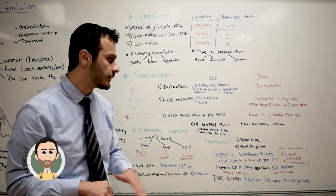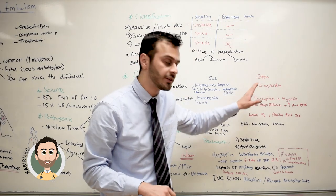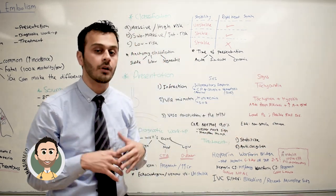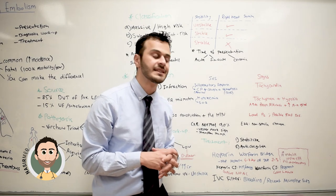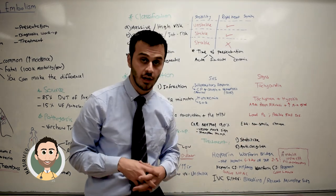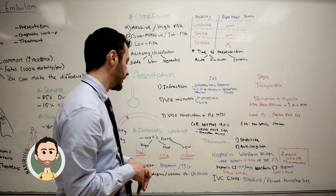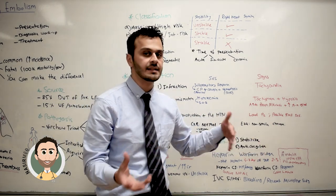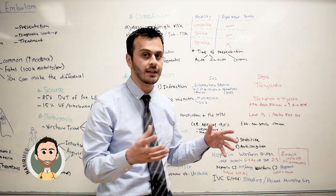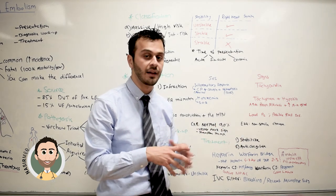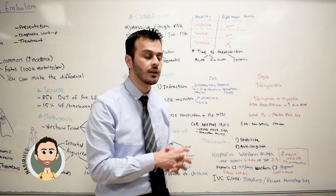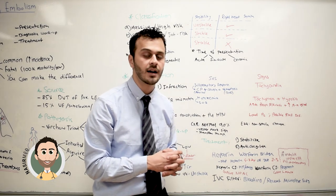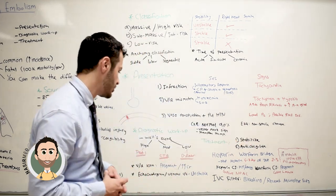Because the patient has tachycardia, you will automatically get an EKG. On the EKG, you will see non-specific changes in patients with pulmonary embolism. You will not see ST changes or signs of MI — other cardiac causes will be ruled out through the EKG.